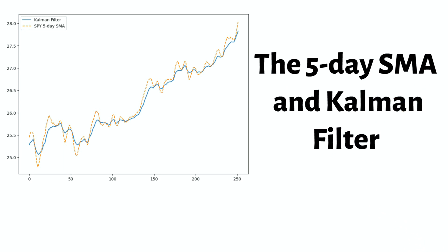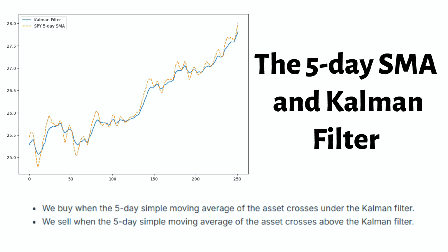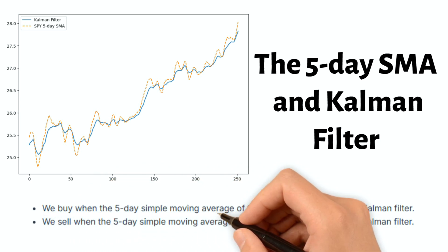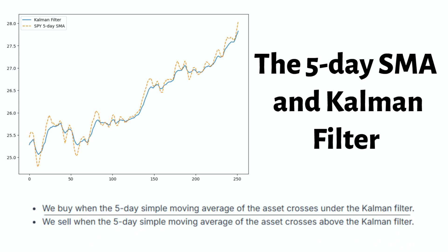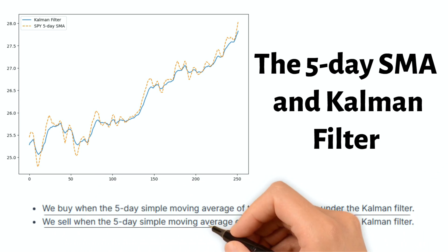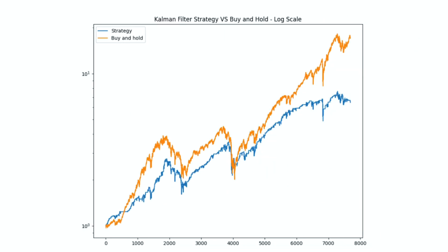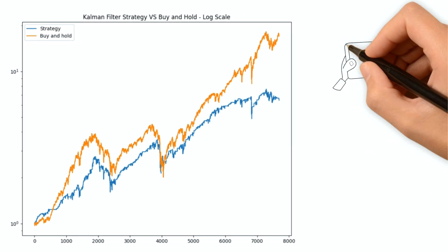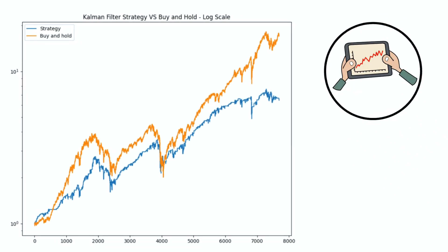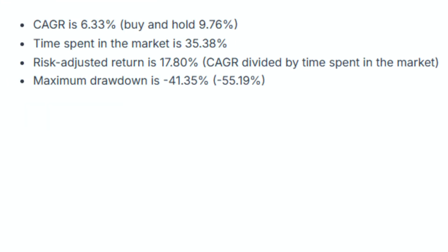The trading strategy is relatively simple yet effective. We buy when the five-day simple moving average of the asset crosses under the Kalman filter. We sell when the five-day simple moving average crosses above the Kalman filter. Here's the equity curve compared with the buy-and-hold strategy — it does not beat buy-and-hold, but it has smaller drawdowns and spends less time invested in the market.